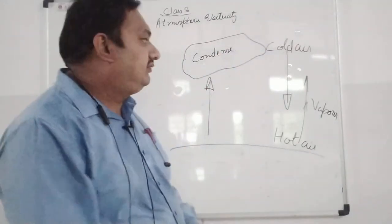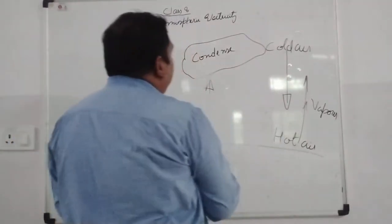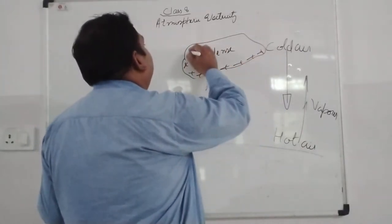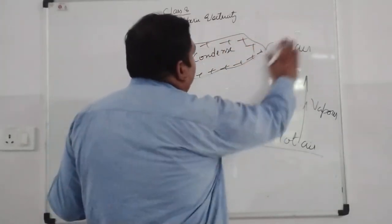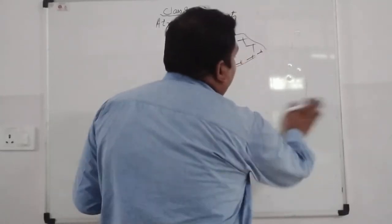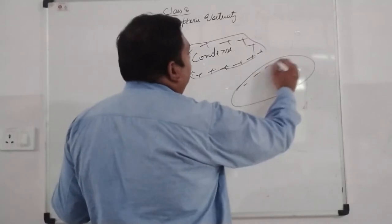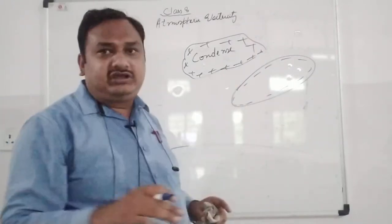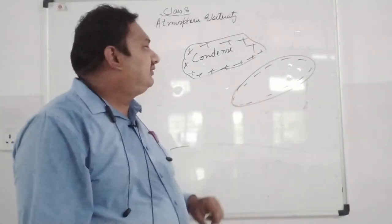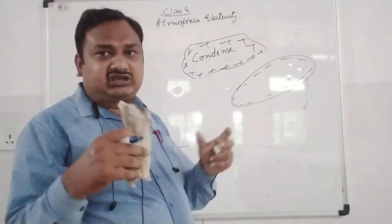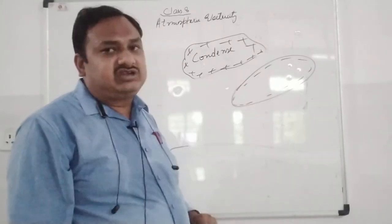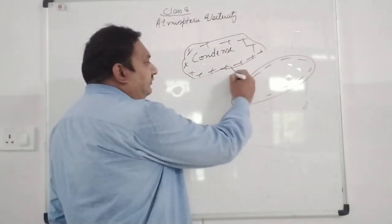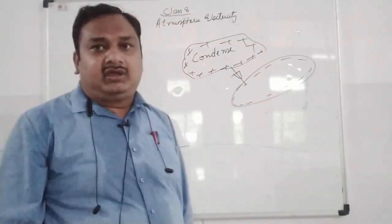Suppose there are two clouds — one is positively charged and nearby there is another cloud which is negatively charged. Due to this, the air present between them, which is normally a bad conductor, in that particular situation when these two oppositely charged clouds approach each other, the air between them behaves as a good conductor.